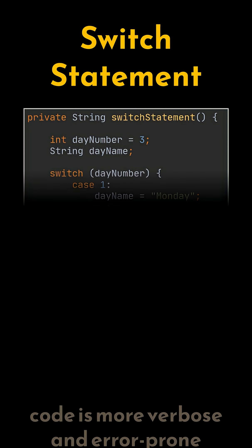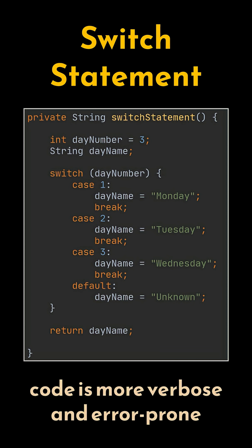Switch statements used to involve a lot of boilerplate code, requiring us to define cases, handle break statements explicitly, and return values separately. This often led to code that was more verbose and error-prone, as you can see.